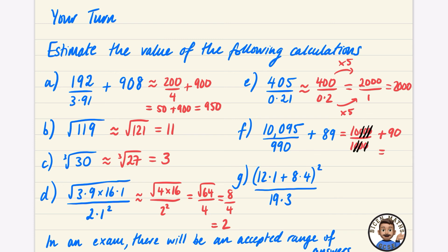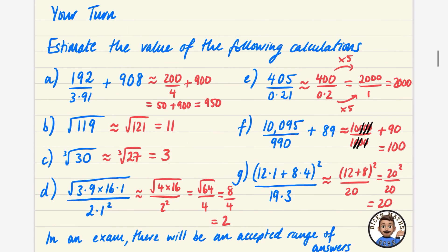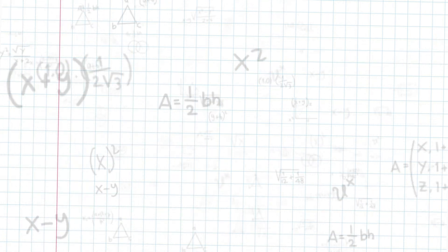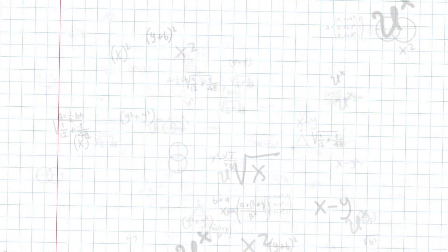For question (g): (12 + 8)² ÷ 20 = 20² ÷ 20 = 400 ÷ 20 = 20. As mentioned, in an exam there is an accepted range of answers, so if you got something close to these values, consider yourself correct. In the next video we'll do some exam-style questions on estimation. If you found this video helpful, drop it a like and consider subscribing. Click the link to go straight to the next video in the playlist.